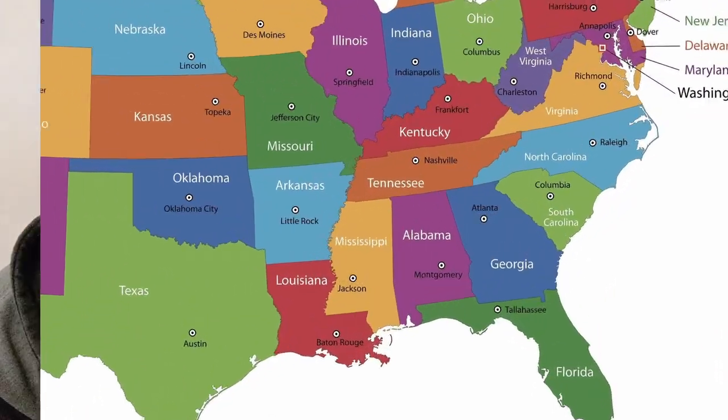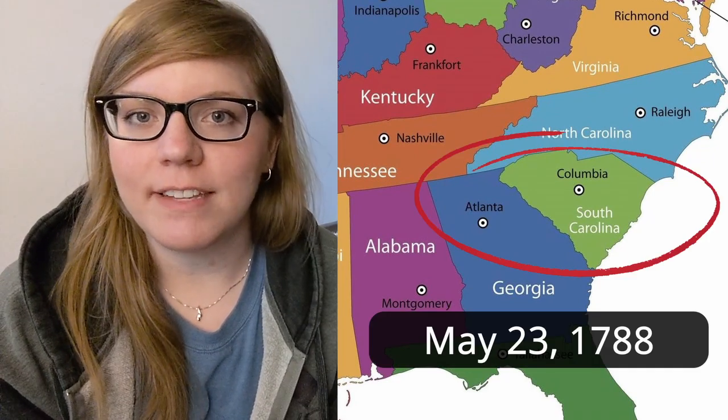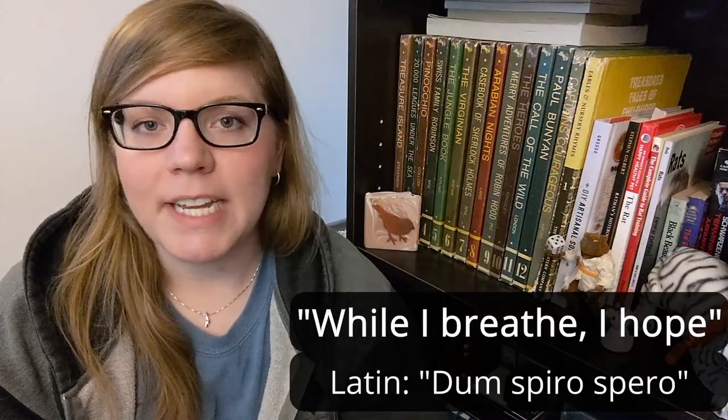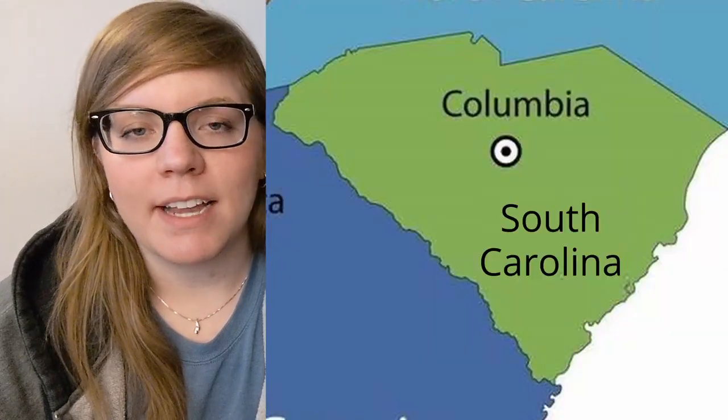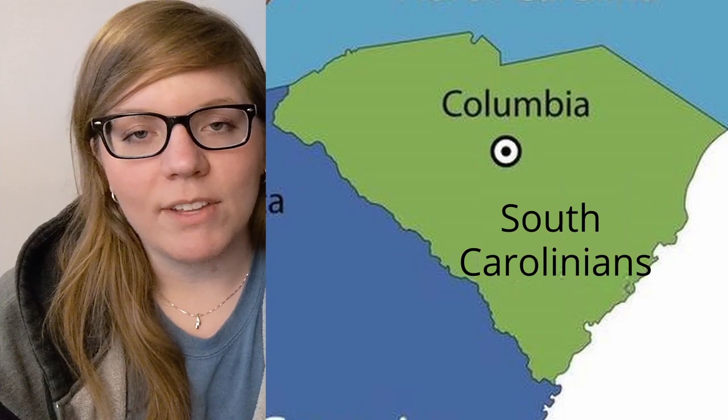Today's soap is inspired by South Carolina, abbreviated S.C., and became part of the United States on May 23, 1788. South Carolina's nickname is the Palmetto State, referring to the state tree, the sable palmetto. South Carolina's motto is 'While I breathe, I hope.' Their state anthem is Carolina, or South Carolina on my mind. The capital of South Carolina is Columbia, and the citizens are referred to as South Carolinians.